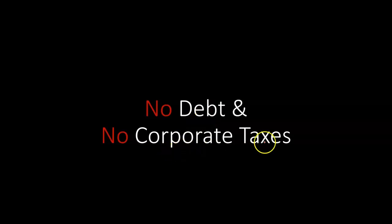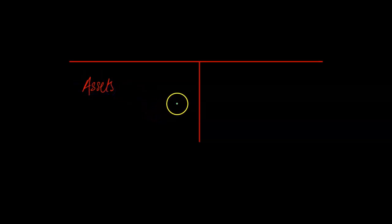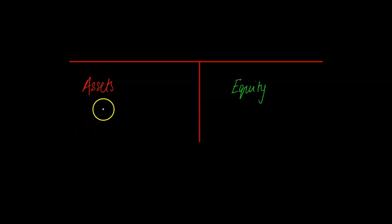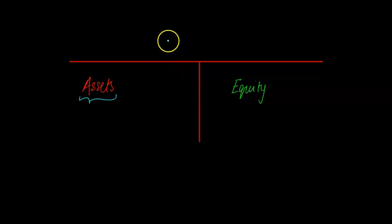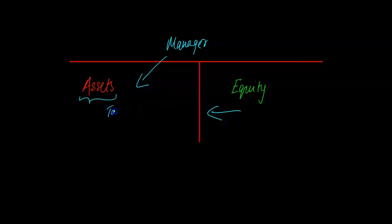We're going to assume a world in which there is no debt and no corporate taxes. In such a world, imagine a firm which has a bunch of assets. I'm going to draw a very simple balance sheet where on the left, the firm has a bunch of assets. If there is no debt, then by definition, all of these assets are funded by equity. For illustration purposes, let's assume these are assets in a restaurant business — a bunch of people who put together all the equity, created a restaurant business, hired a manager, and provided tables, chairs, raw materials like tomatoes and potatoes to produce dishes sold to customers.